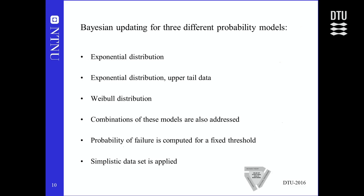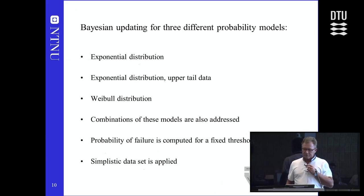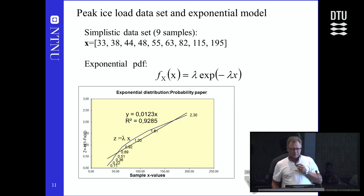Looking at Bayesian updating, we consider three probability models: the full exponential, the exponential fitted to upper tail data, and the Weibull. We also consider their combination, starting with equal prior probabilities for each, and then letting the data determine which model is best. We also look at probability of failure for a fixed threshold. A simplistic data set of nine samples is used to make it more transparent, representing line loads on the bow area from 33 kN/m up to 195 kN/m.